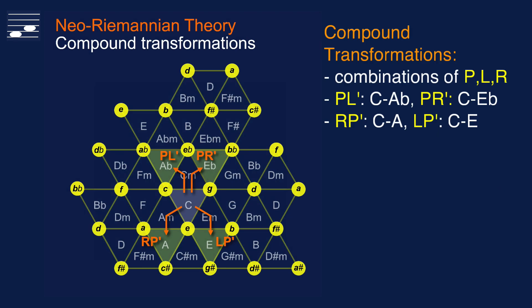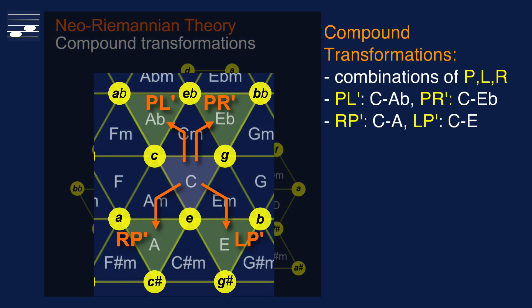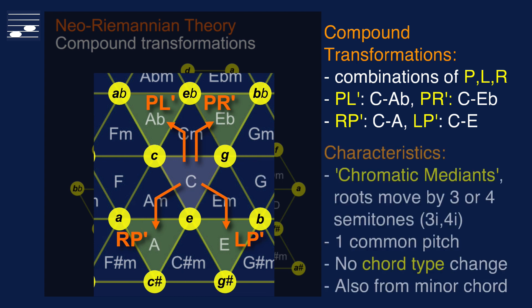The chord type does not change when using compound Riemannian transformations, a pairwise combination of the simple P, L and R operations. Now the roots move by either three or four semitones, and the triad combinations are called chromatic medians, since they do not naturally occur in diatonic scales. The two triads share one common note.